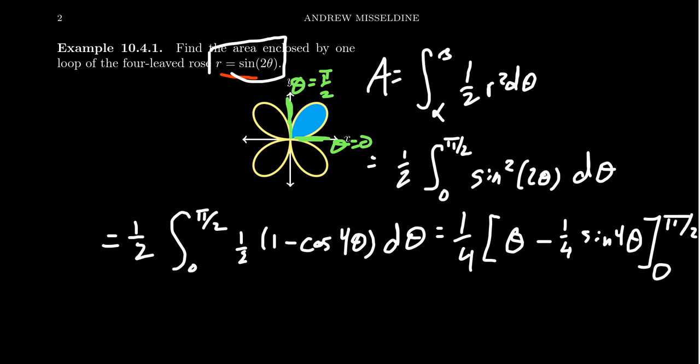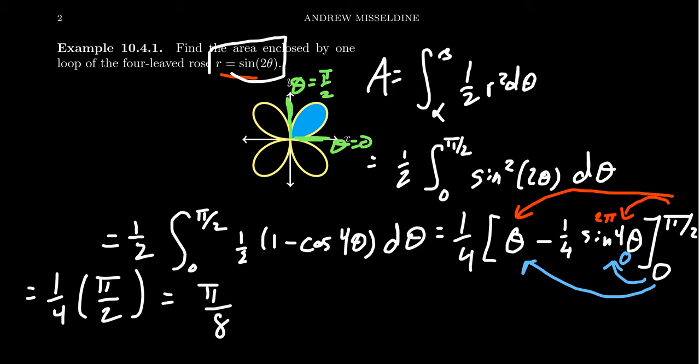Notice what happens when you plug in pi halves. We plug in pi halves for theta. When you plug it in for sine, you get sine of two pi, which goes to zero. So you end up with one-fourth times pi halves. When we plug in zero, that gives zero for theta, and sine of zero is also zero, so everything disappears. We end up with just pi halves when we plug it all in. Times it by the one-fourth, and you end up with the area of a single petal being pi eighths.